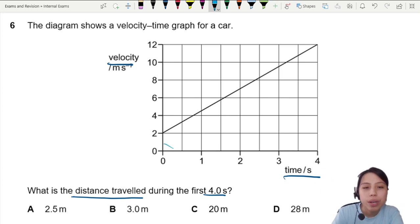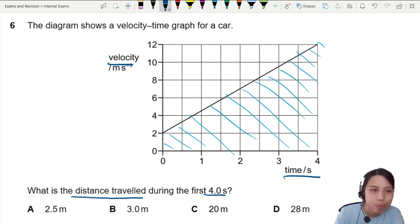So there's a few ways. If you recognize this as a trapezium area, you can use the trapezium equation. The distance traveled is going to be half times this base, which is four seconds.